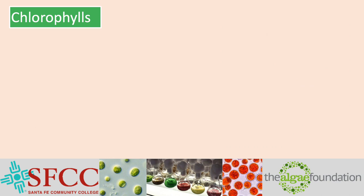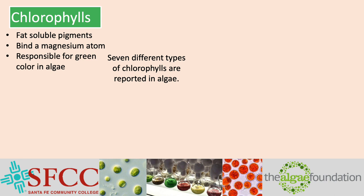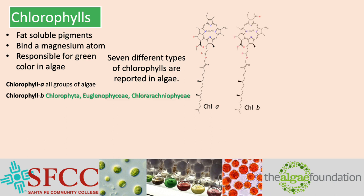Chlorophylls are fat-soluble pigments that bind a magnesium atom and are responsible for the green color in algae. Seven different types of chlorophylls are reported in algae. Chlorophyll A is present in all groups of algae. Chlorophyll B is present in the Chlorophyta, or green algae, Euglenophyceae, and the Chlorarachniophyceae.